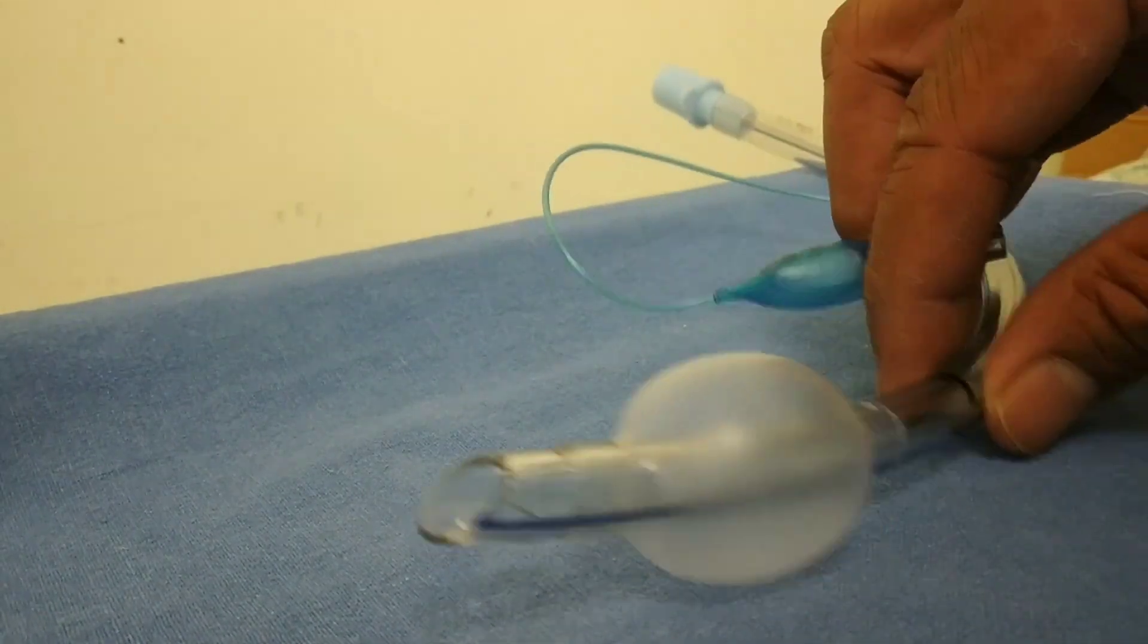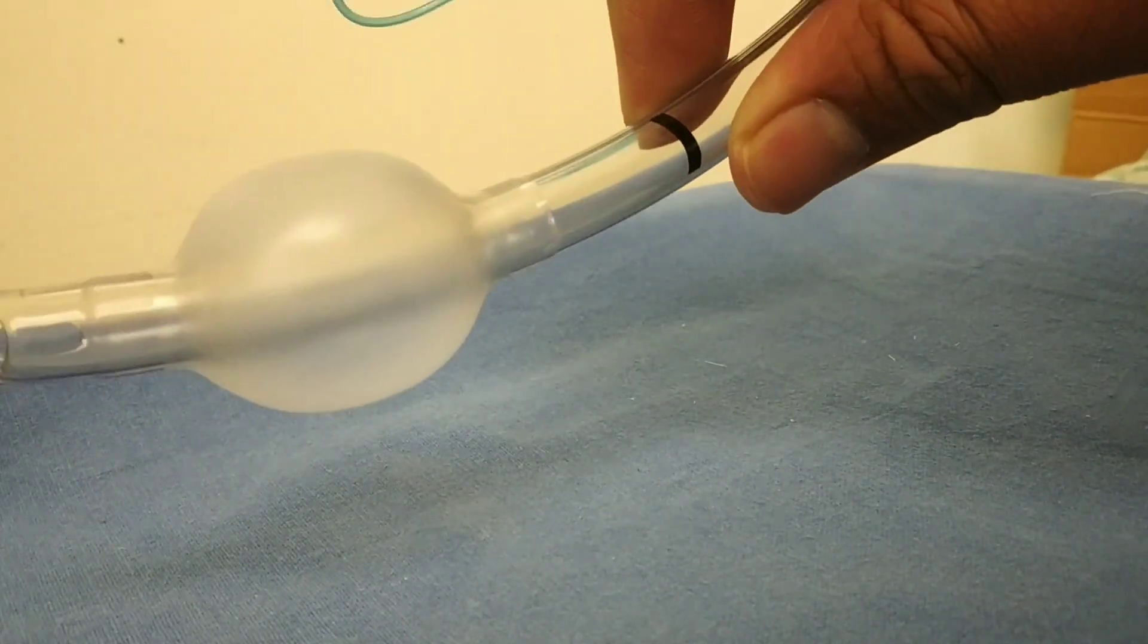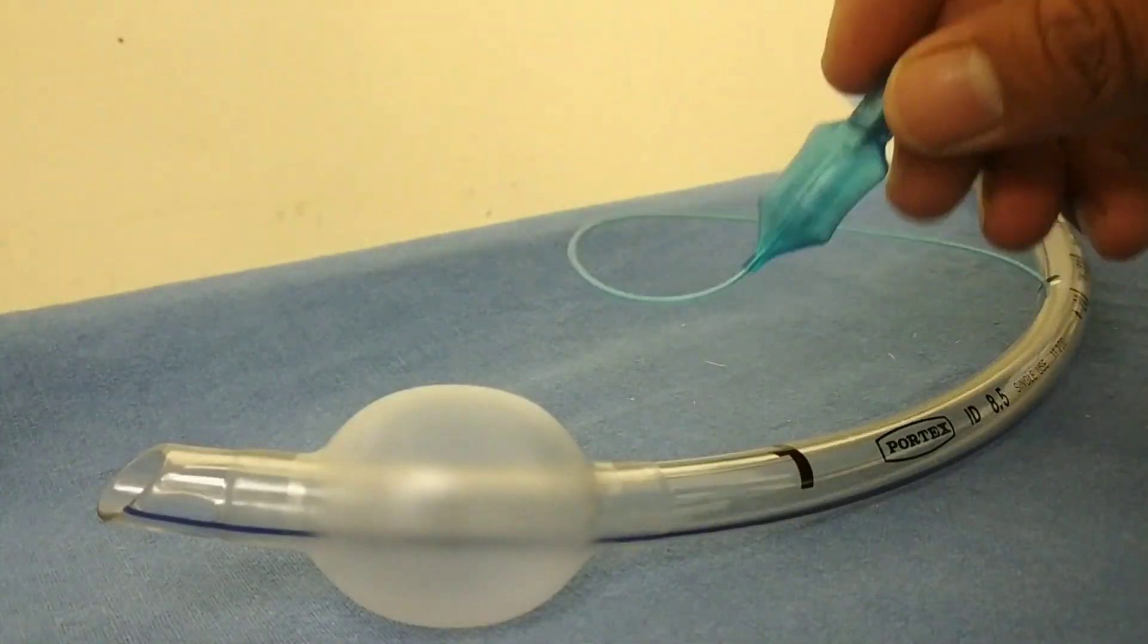If there is a leak, the pilot balloon gets collapsed. Due to the one-way valve, the pressure remains inside the cuff and keeps it inflated. That's all for the ET tube, thanks for watching.